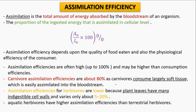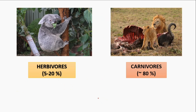Assimilation efficiency is measured within a single trophic level — it is the ratio of assimilation to ingestion, multiplied by 100. Carnivores show maximum assimilation efficiency of about 80%, because they consume soft tissue which is easily assimilated into the bloodstream. Herbivores show the lowest assimilation efficiency, ranging from 5 to 20%. Among herbivores, aquatic herbivores show higher assimilation efficiency than terrestrial herbivores.